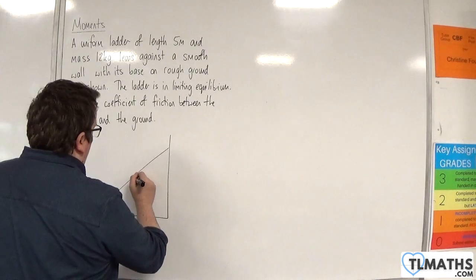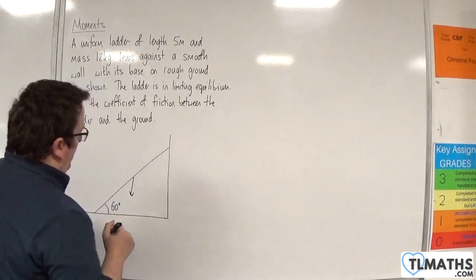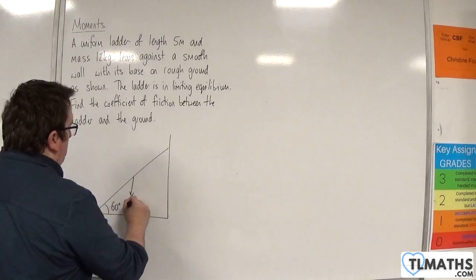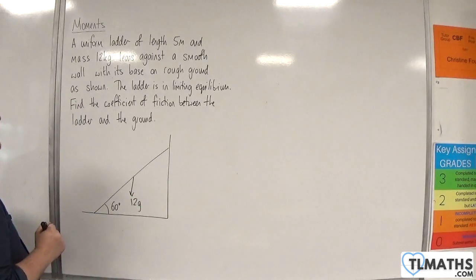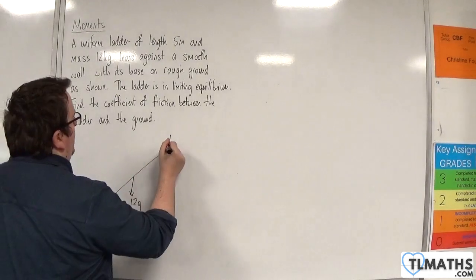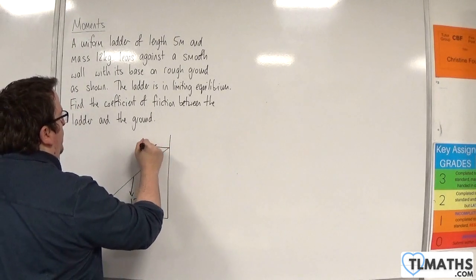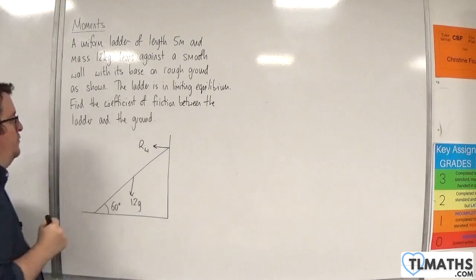Now, because it's uniform, the weight will act through the centre of the ladder, and so that will be 12g. And it's in contact with a smooth wall, so there will be a reaction force, so normal reaction force, Rw.